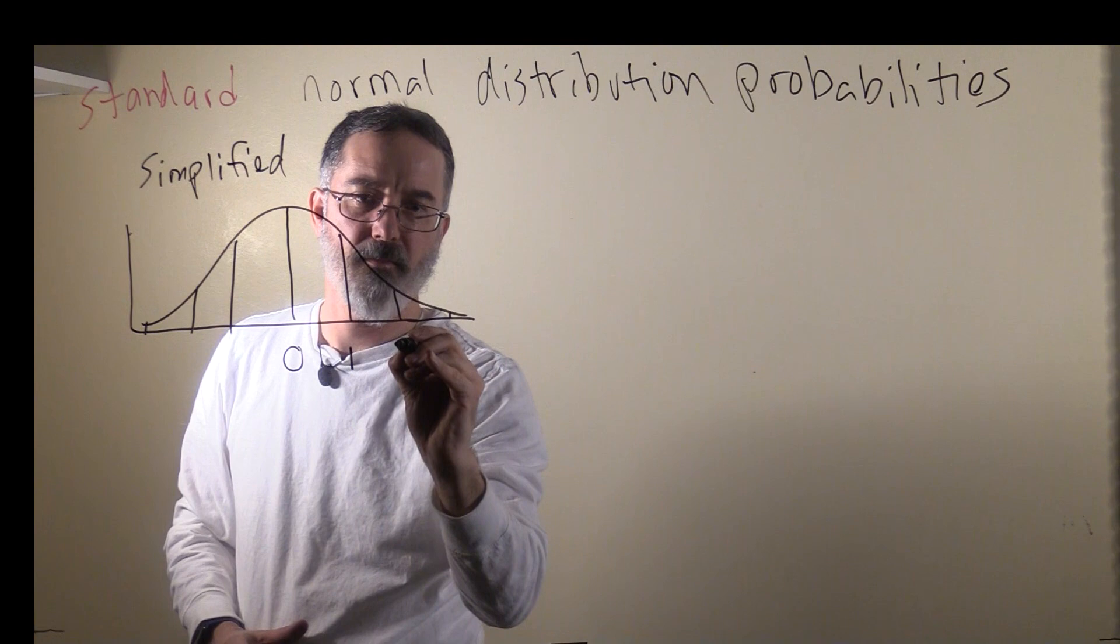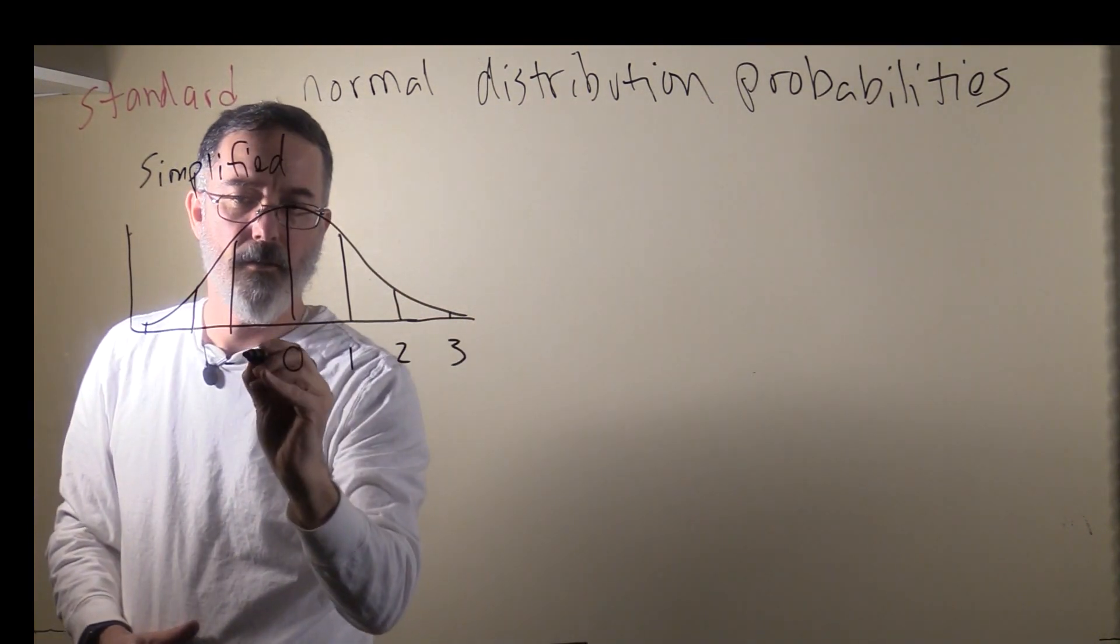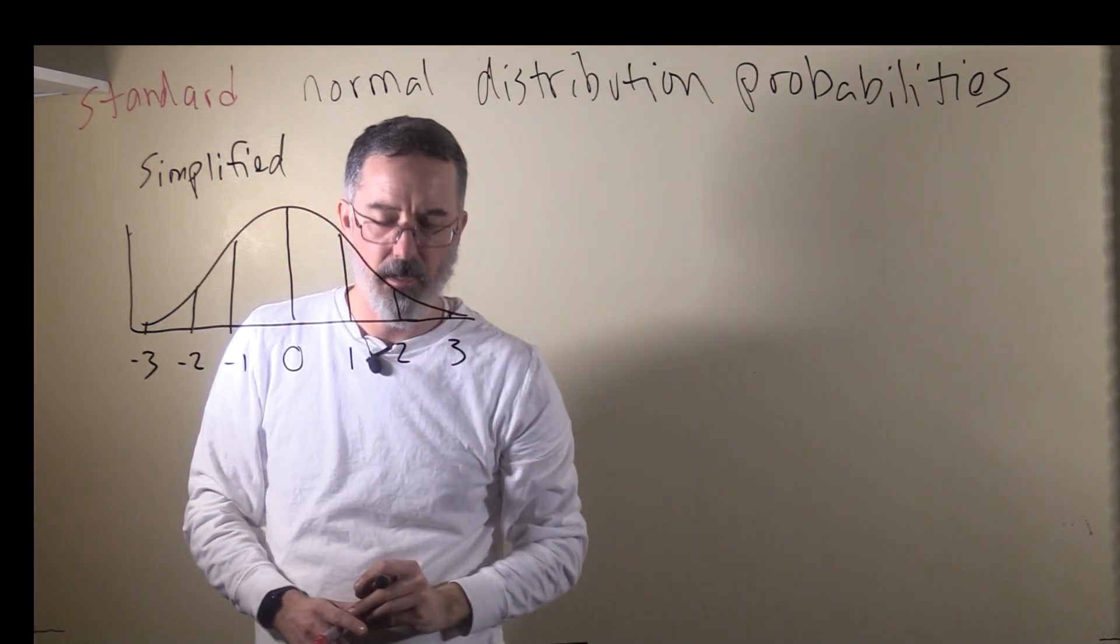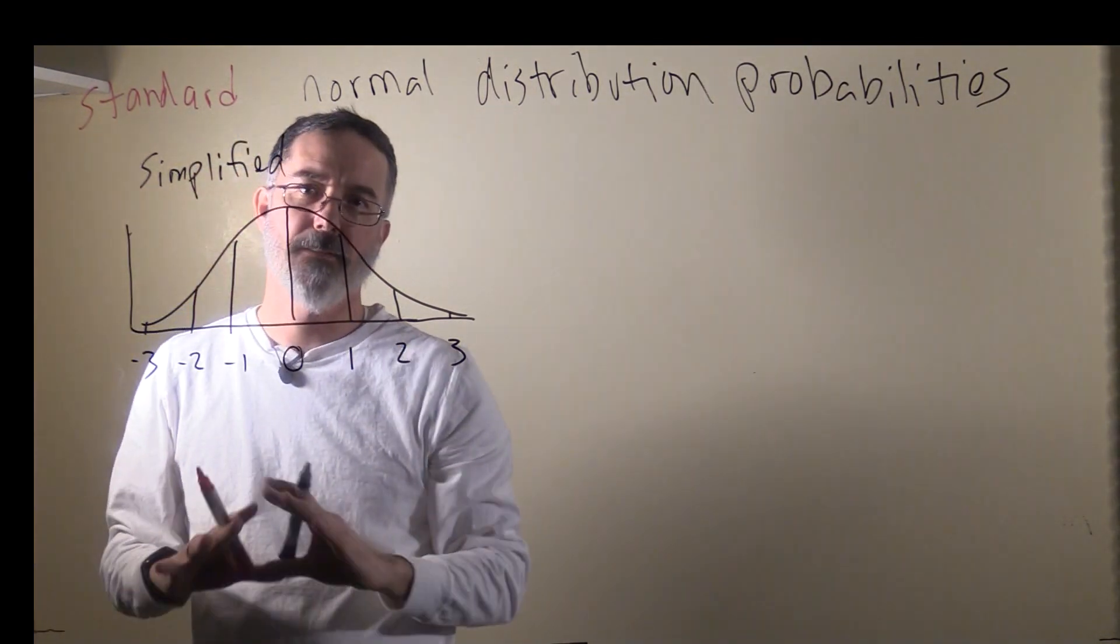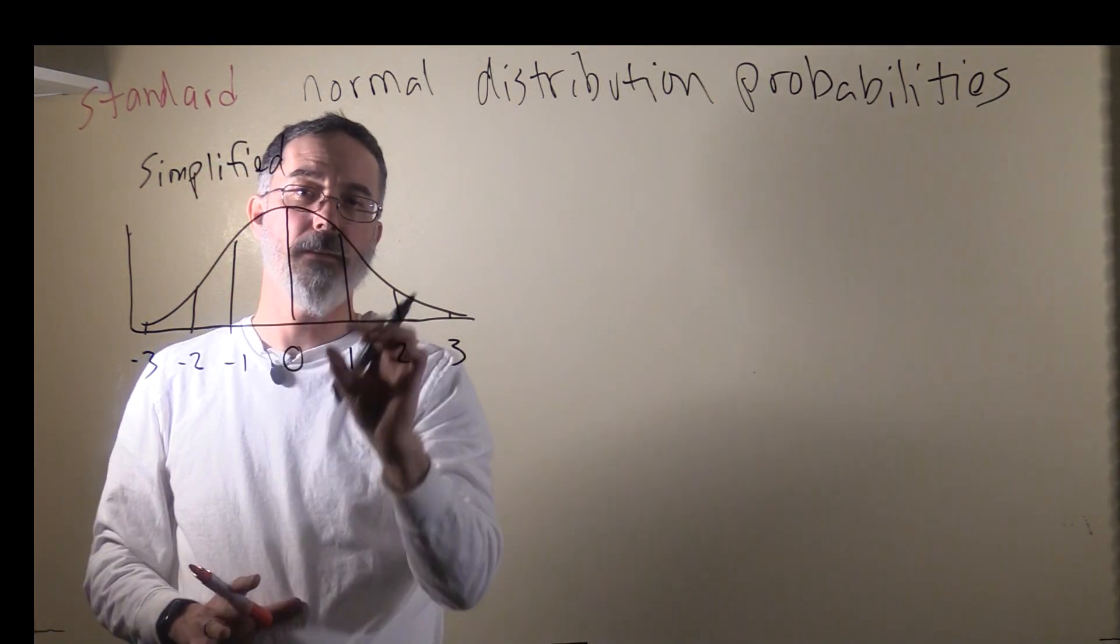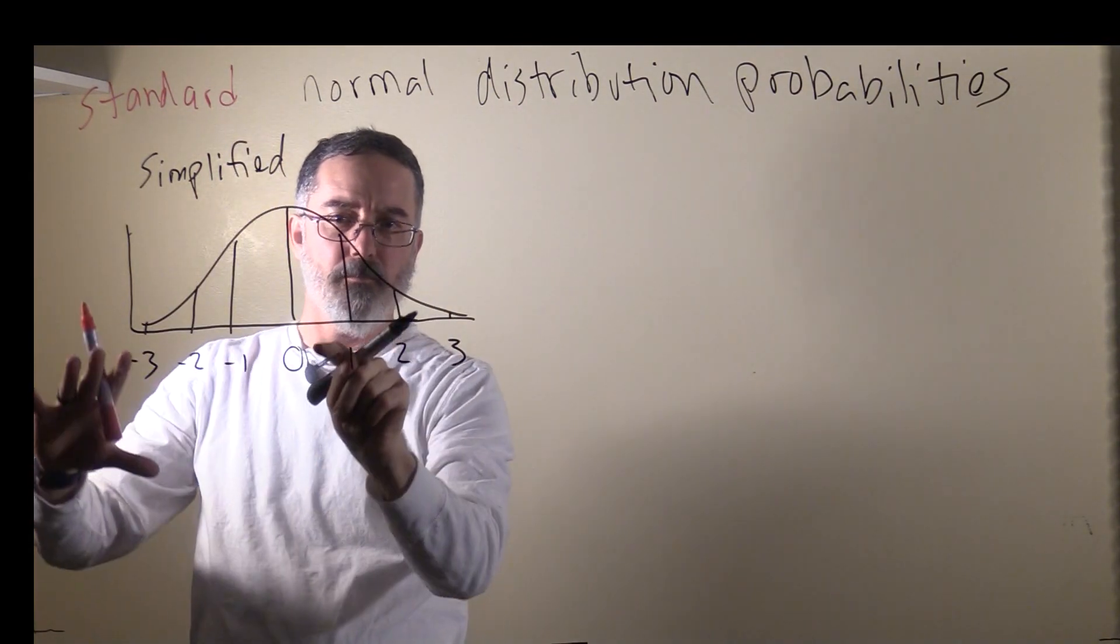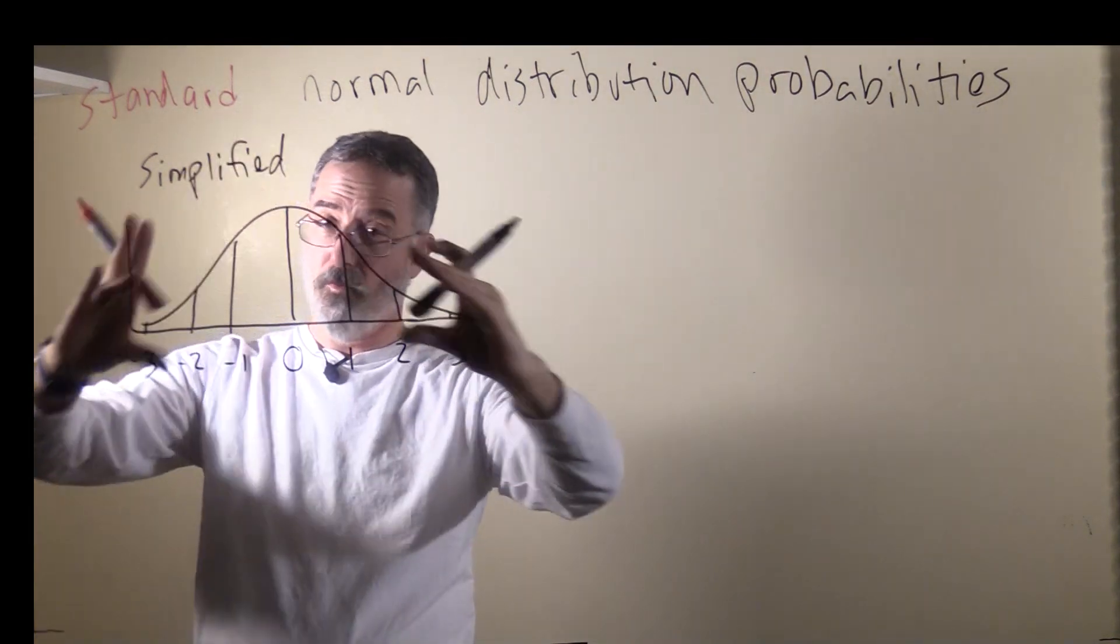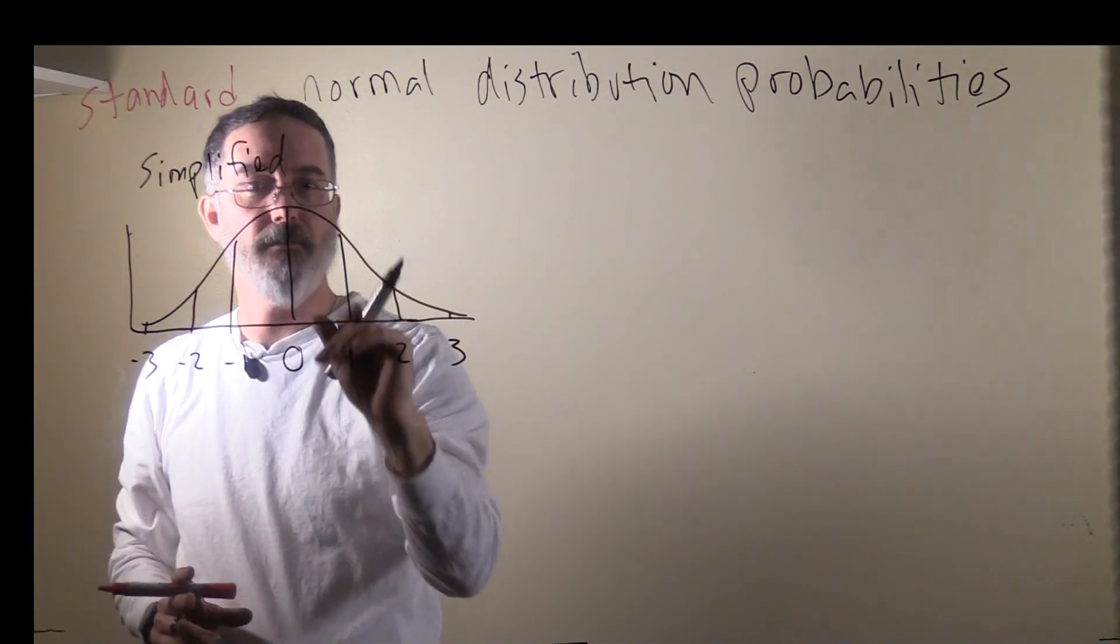The mean, one standard deviation above the mean, two standard deviations above the mean, three above the mean, one, two, and three standard deviations below the mean. Because the normal distribution is always the same shape, people have calculated what area under this curve is between zero and one standard deviation. Under the curve, overall it's 100% of the area, but that 100% can be calculated for each of these.